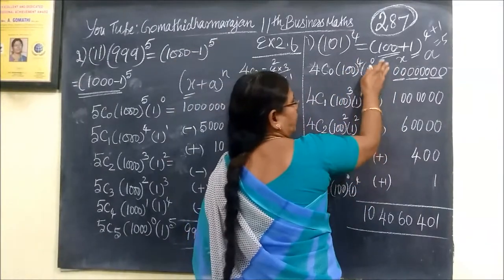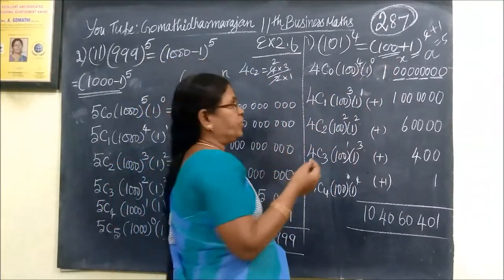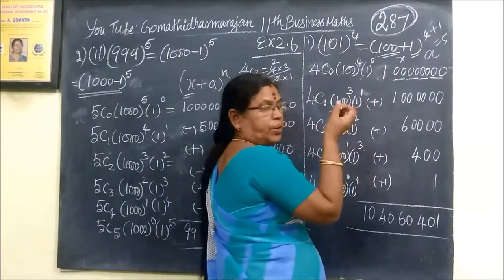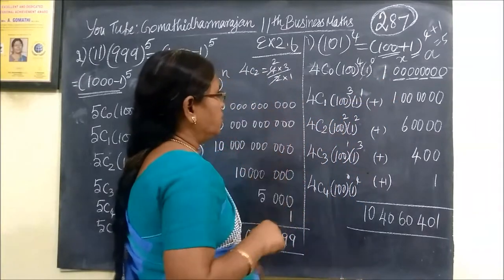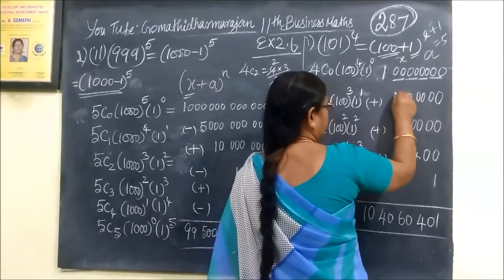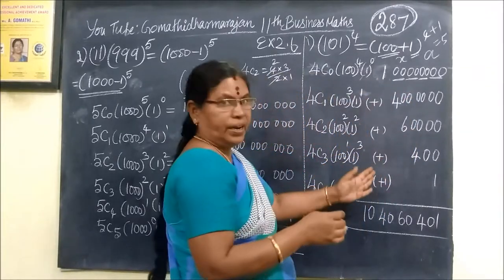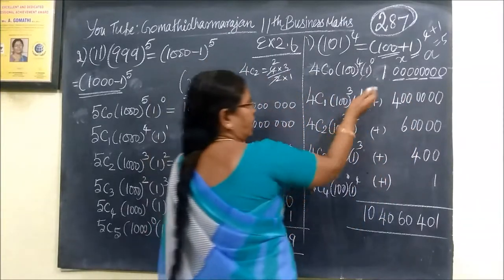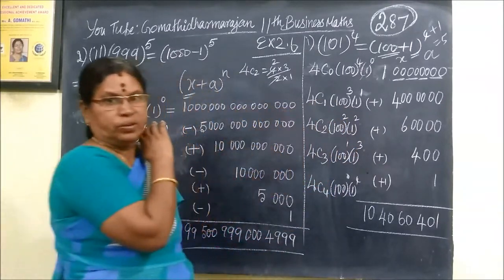1 power 0 is 1. Now 1 power 4, 1. 4C1 is 4. This is 100 cubed. That means 4 times 100 cubed. You can see it. It will be very broad.